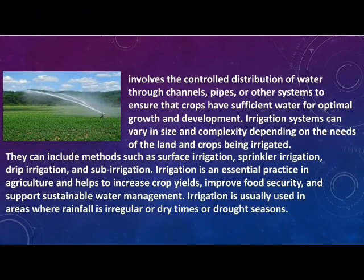Irrigation in agriculture involves the artificial application of water to soil to assist in the growth of crops. It is a critical practice to ensure consistent and optimal moisture levels, especially in regions with insufficient rainfall.